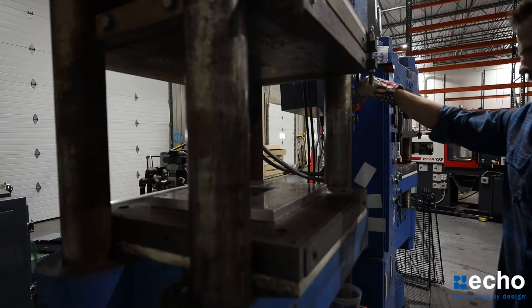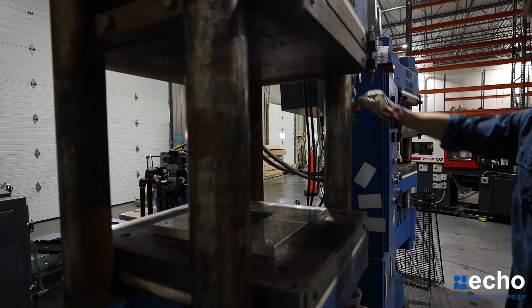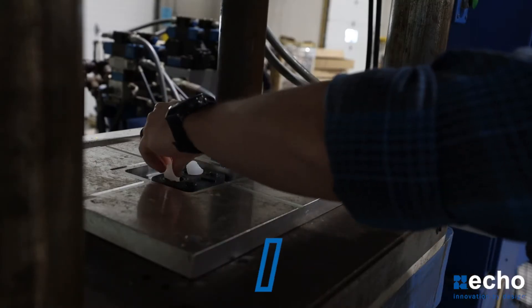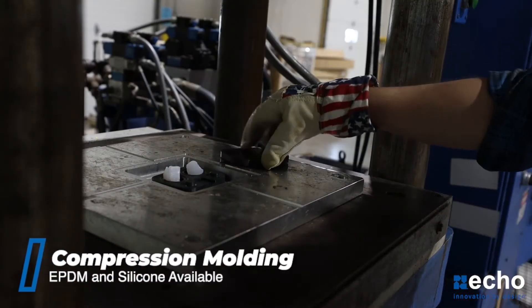After the mold is completed, we heat it up and add the rubber material to the cavities. We are now able to do either silicone or EPDM for this step.